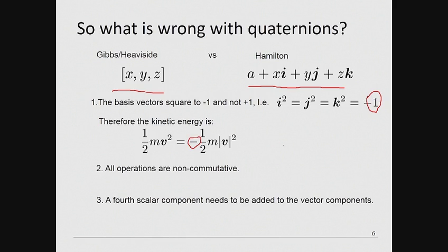The second difficulty is, because all basis vectors anti-commute in Hamilton's system, then all operations with Quaternions in general being non-commutative. Thirdly, in place of a simple three-component Gibbs vector, we are required to add a fourth, apparently unnecessary, scalar component.